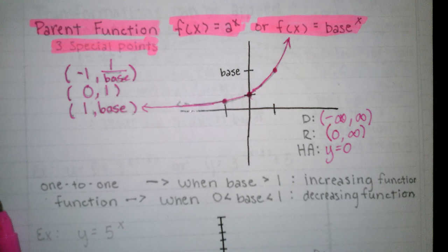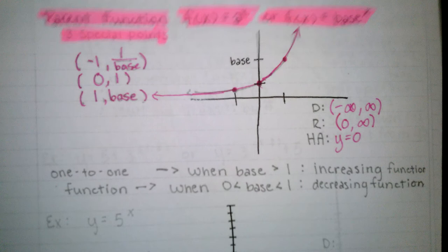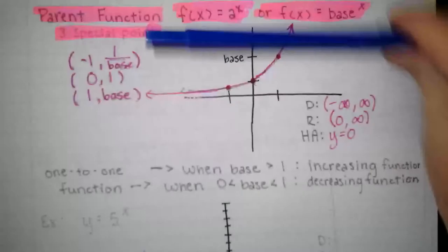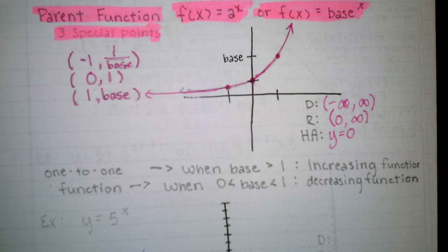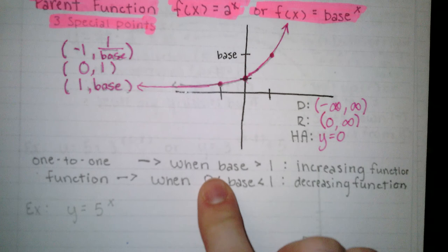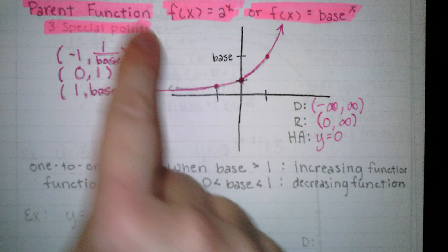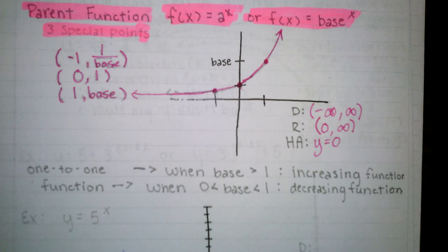Let's look at one-to-one. These functions are one-to-one functions, meaning that they pass the vertical line test and they pass the horizontal line test. So if we were to find the inverse, the inverse would also be a function. When your base is bigger than 1, your function is going to be an increasing function. If your base is between 0 and 1, like a fraction, then what happens is it's reflected across the y-axis. And I'll show you why that happens a little bit later.